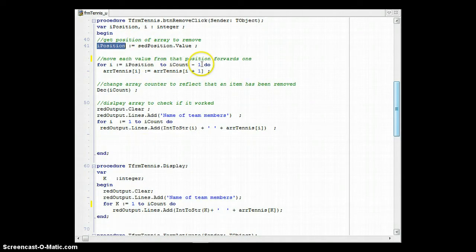We will then move from that position until count minus 1. Remember I explained with the diagram that we don't want the last value that doesn't exist to move to the last value. We just go until count minus 1.